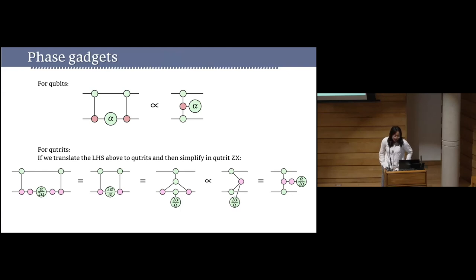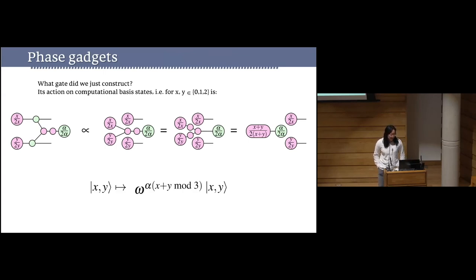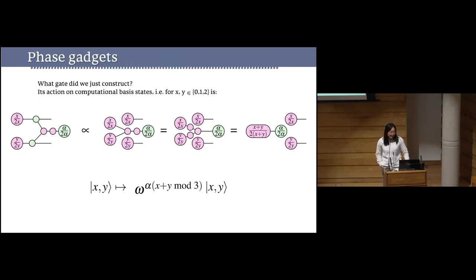Through a short rewrite in q-trit ZX calculus, translating each generator in the qubit decomposition to its q-trit version, we get something that is a generalisation of the qubit phase gadget. Specifically, the resulting map sends computational basis state |xy⟩ to omega to the power (alpha·(x+y mod 3)) times |xy⟩, where omega is the third root of unity and x, y are integers mod 3.